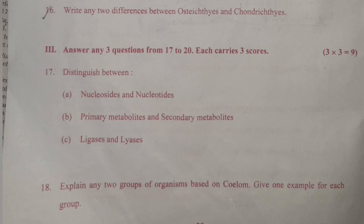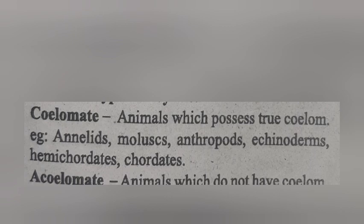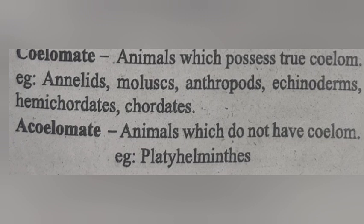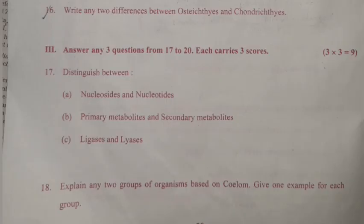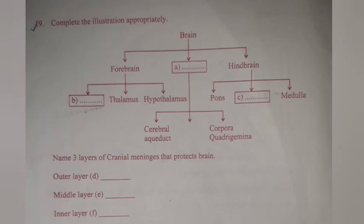Question 18: Explain any two groups of organisms based on coelom. Give an example for each group. Answer: Coelomate — animals which possess true coelom. Example: Annelids, molluscs. Acoelomate — animals which do not have a coelom. Example: Platyhelminthes. Pseudocoelomate — animals having body cavity called pseudocoel present between the body wall and alimentary canal; the cavity is not lined by mesoderm. Example: Aschelminthes.